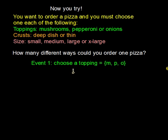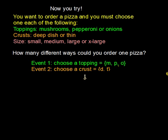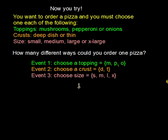Event one is choosing a topping, and the possible outcomes include mushroom, pepperoni, or onion. Event two is choosing a crust, and the possible outcomes are deep dish or thin. Event three is choosing the size of the pizza, and the possible outcomes are small, medium, large, or extra large.